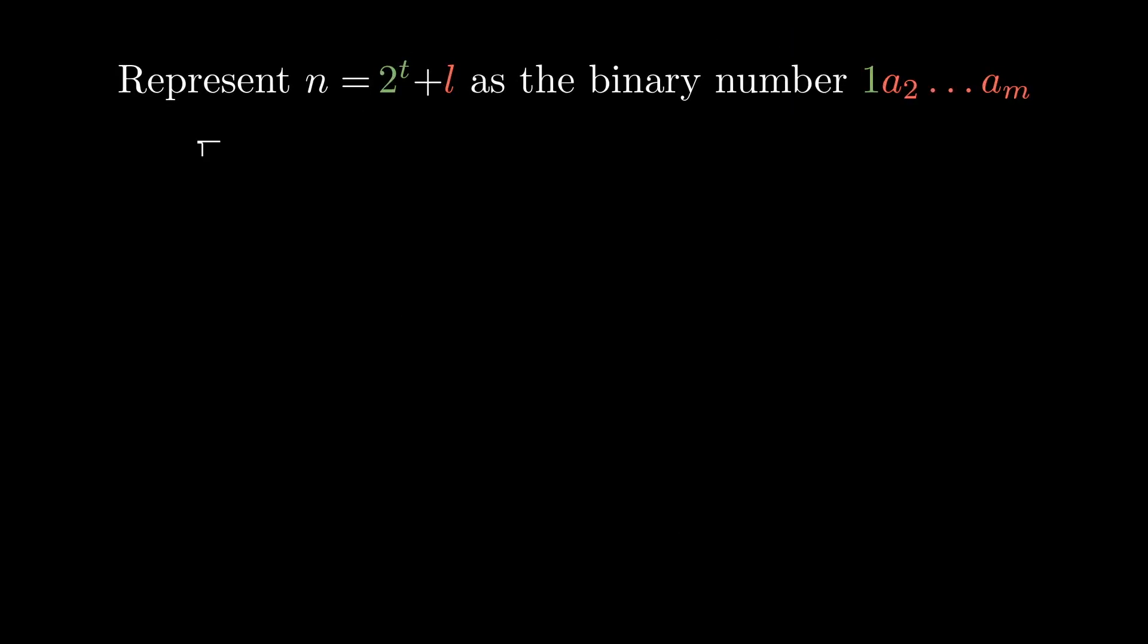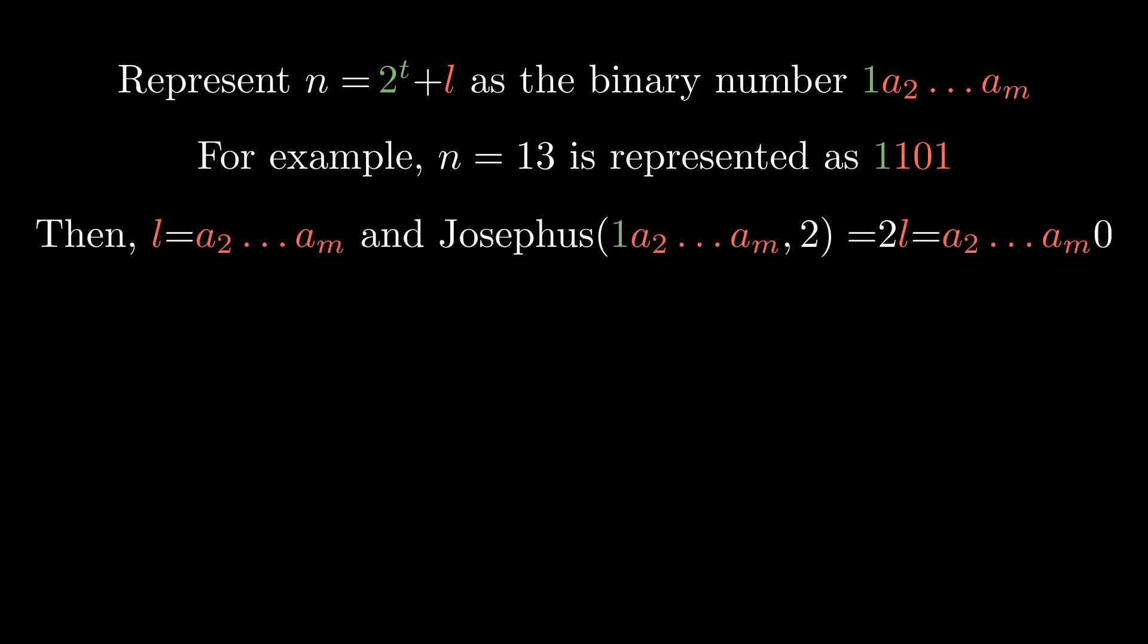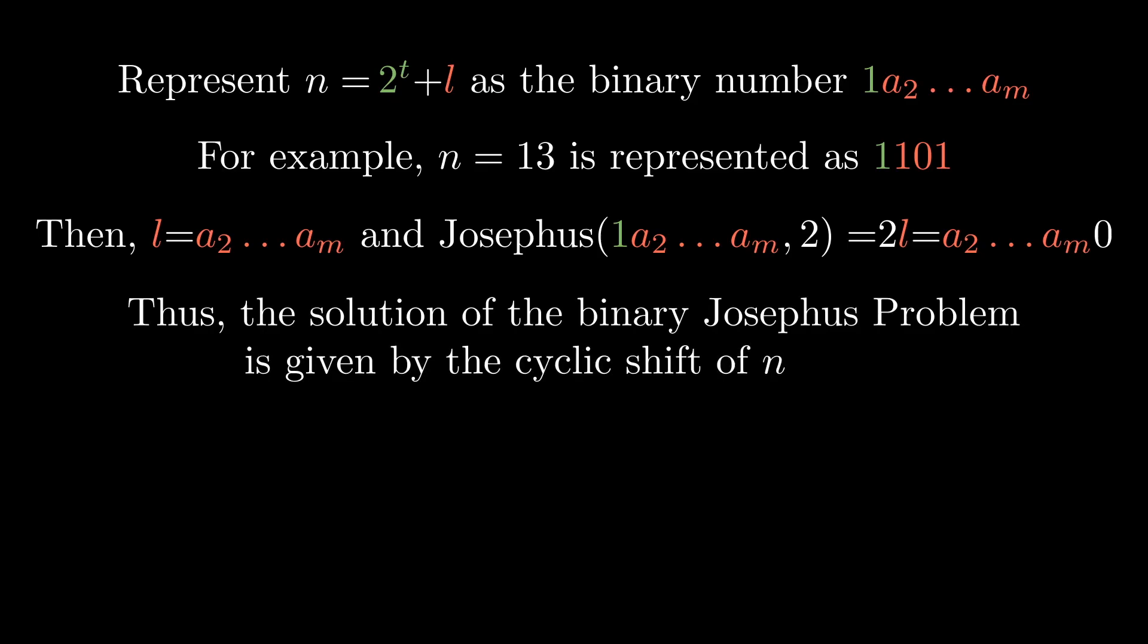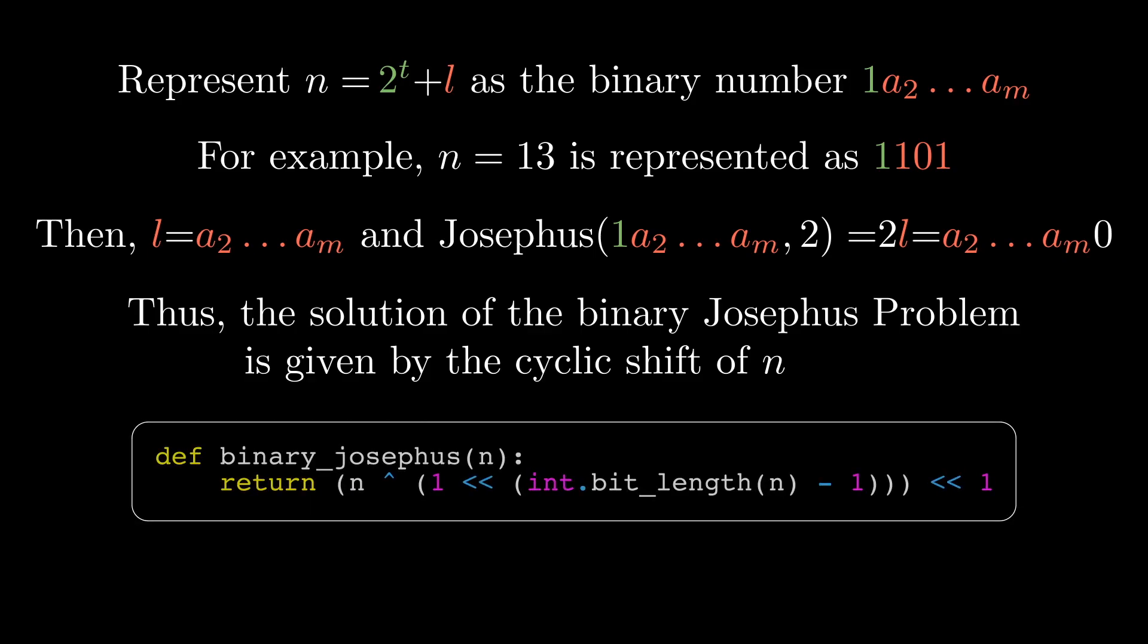The answer that we have just found becomes particularly nice if we consider a binary representation of n. Namely, assume that the binary n is written as 1 followed by a2, a3, up to am. Then, a2 up to am is the binary representation of l. To get 2l, we append 0 or equivalently shift l to the left. Thus, Josephus(n, 2) is equal to the cyclic shift of n in the binary representation. This leads to a single-line Python code that uses bit manipulations. We first drop the most significant bit of n by a bitwise XOR with a power of 2 and then shift to the left to multiply the result by 2.